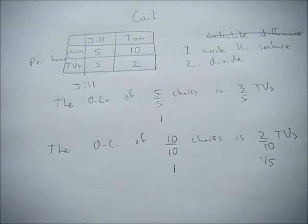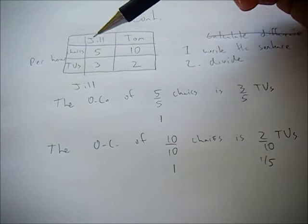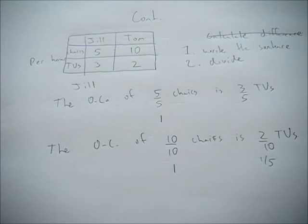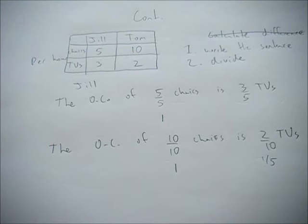You can rewrite the sentences for the other way, such as the opportunity cost of 3 TVs is 5 chairs. But go through that same method. By writing the sentence and then dividing, you should be able to get it right. I know opportunity cost can be tricky, but this should be a good way to always get this problem right.